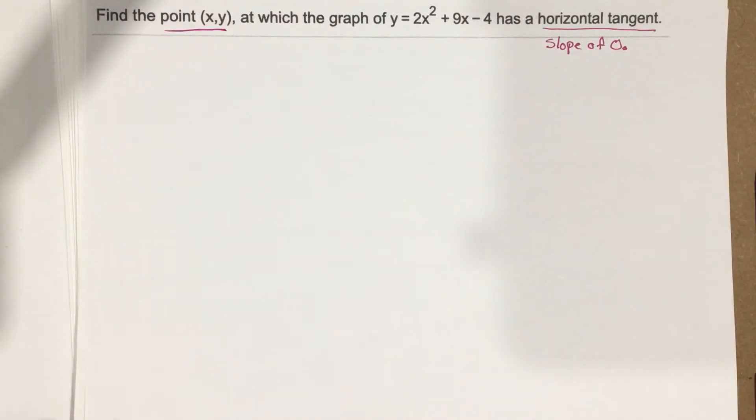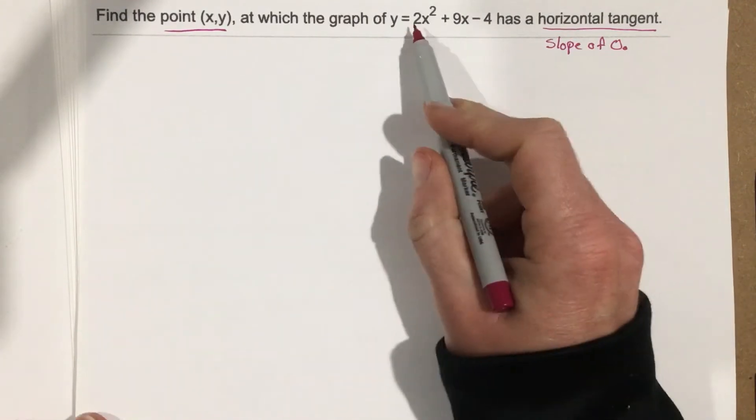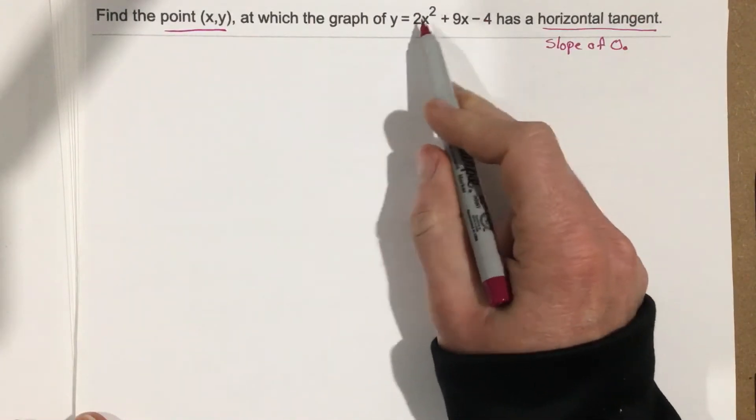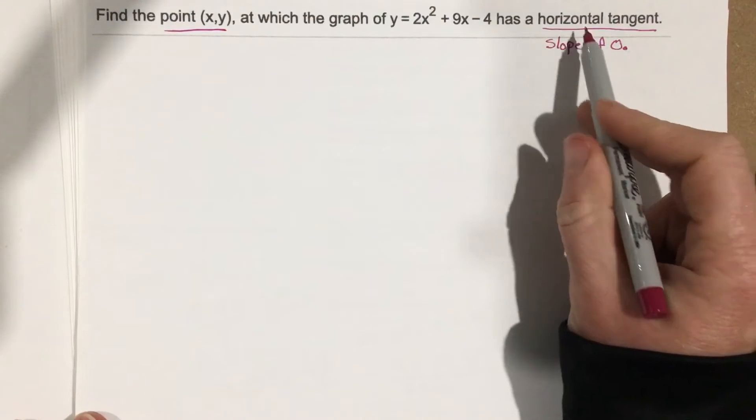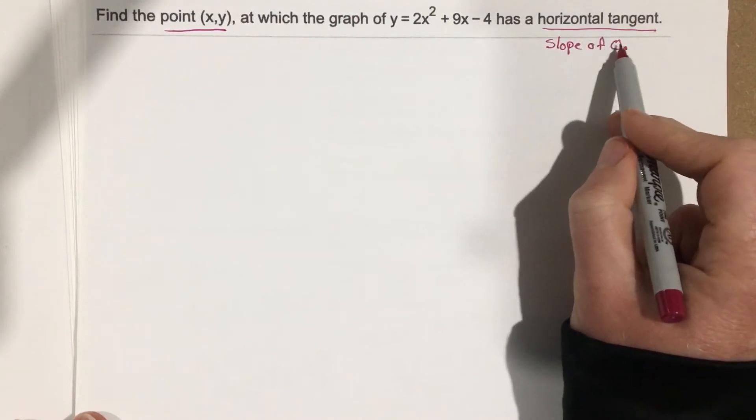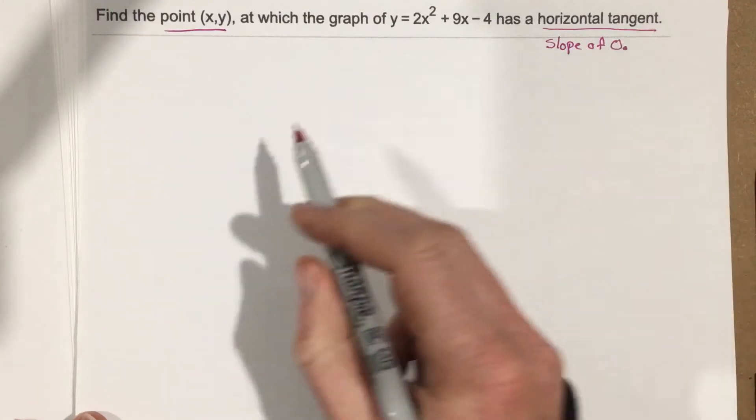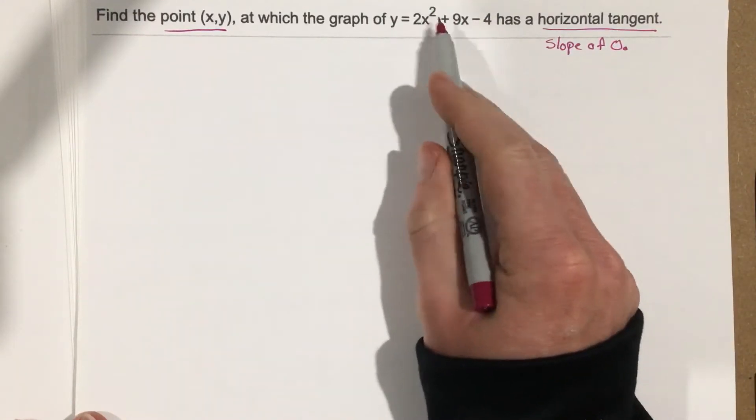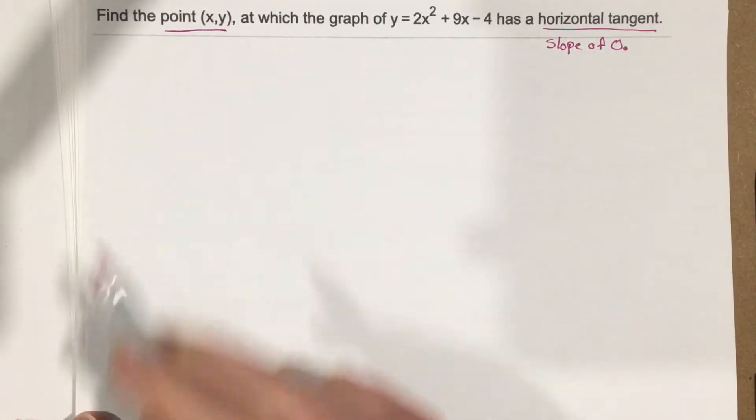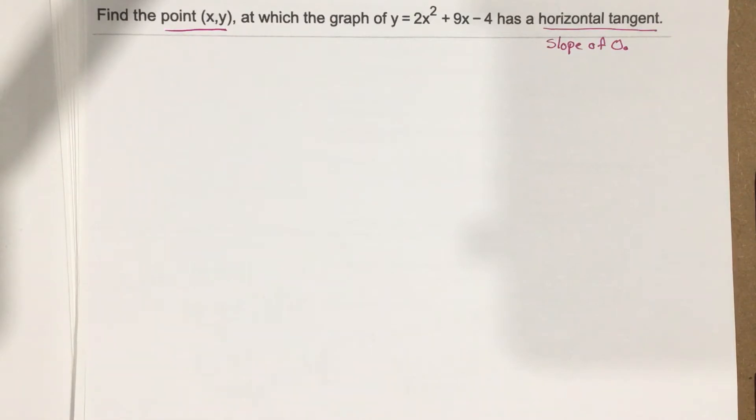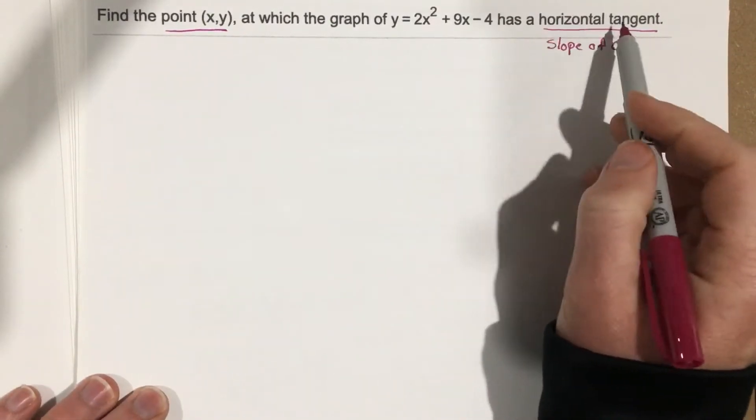So what we're going to do is find the slope expression for this equation. Then we're going to use the fact that a horizontal tangent will have a slope of 0 to find an x value. Once we find the x value, we'll plug it back into this function to find the y value so we actually know where that specific spot is that we have this horizontal tangent.